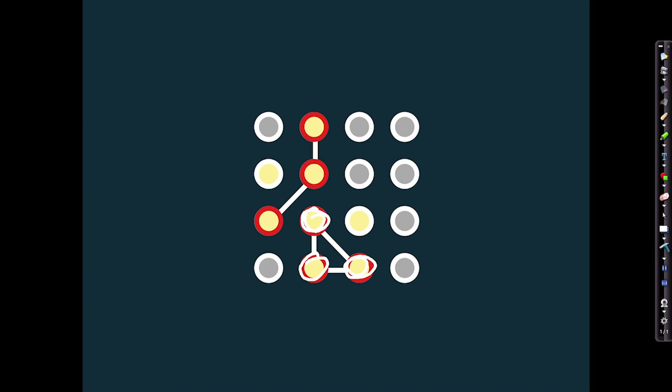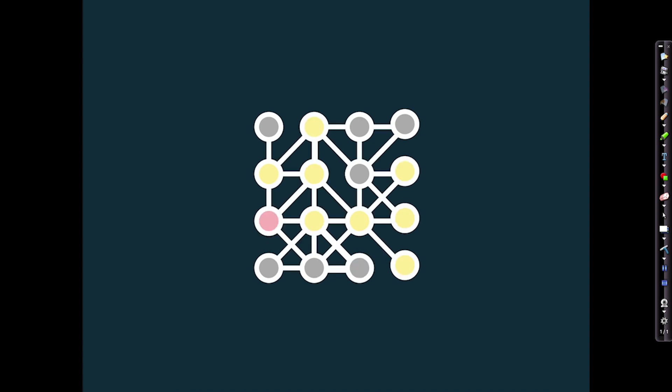Over time — across different timescales we won't detail here — your brain sculpts its connectivity based upon the patterns of sensory information it receives from the environment. Over time, the brain learns about sensory information and from that learns something about the structure of the environment: what kind of sensory information it is likely to receive.